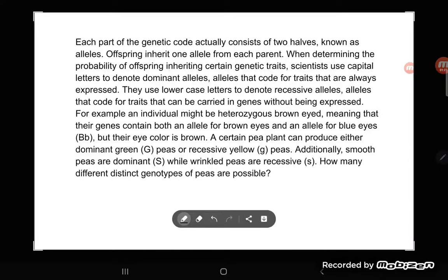A certain pea plant can produce either dominant green peas capital G or recessive yellow peas little g. Additionally smooth peas are dominant capital S while wrinkled peas are recessive lowercase s. How many different distinct genotypes of peas are possible? So first of all this problem is real tricky if you don't have a science background. But let's go straight to the question before we get into that. Remember I asked you what are we looking to do or to find? It says right here that the question is how many different distinct genotypes of peas are possible?